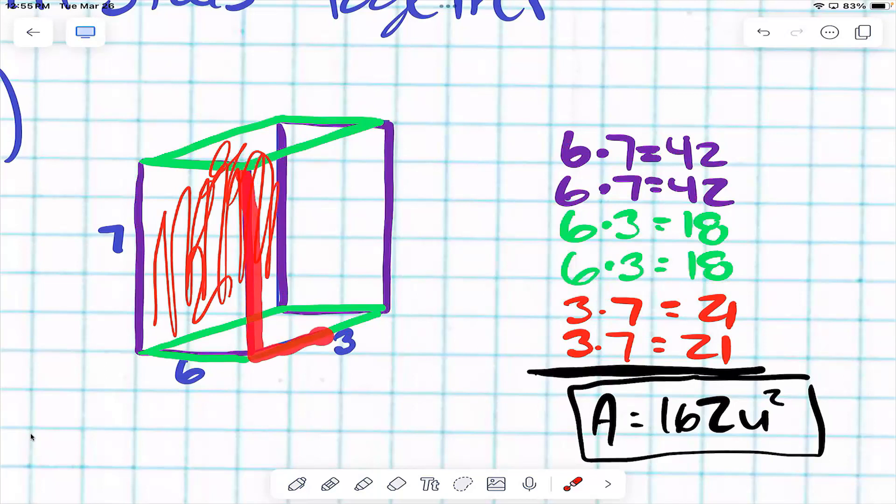On the front side, so the fifth of the six faces, what are the dimensions of that one? Say that again? Base three, height seven, right?